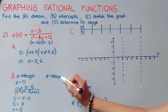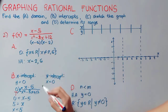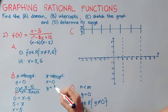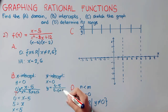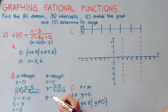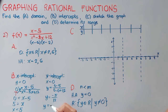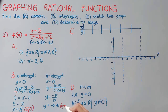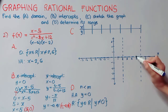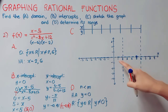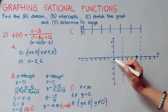Now let us get our y-intercept by making x equal zero. So y equals 0 minus 5, all over 0 squared minus 8 times 0 plus 12, which gives negative 5 over positive 12. As a decimal, that is approximately negative 0.41. So our corresponding intercept points are (5, 0) and (0, -0.41). Plotting these: (5, 0) and (0, -0.41).